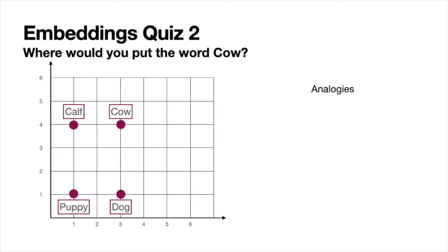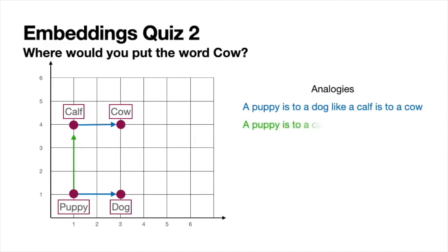What's an analogy? For example, a puppy is to a dog as a calf is to a cow, because a puppy is a baby dog and a calf is a baby cow. That is captured with the two blue arrows here. There's another analogy: a puppy is to a calf as a dog is to a cow, captured in the two green edges here. So the fact that these words form a parallelogram is pretty interesting — analogies are really nicely captured in embeddings.